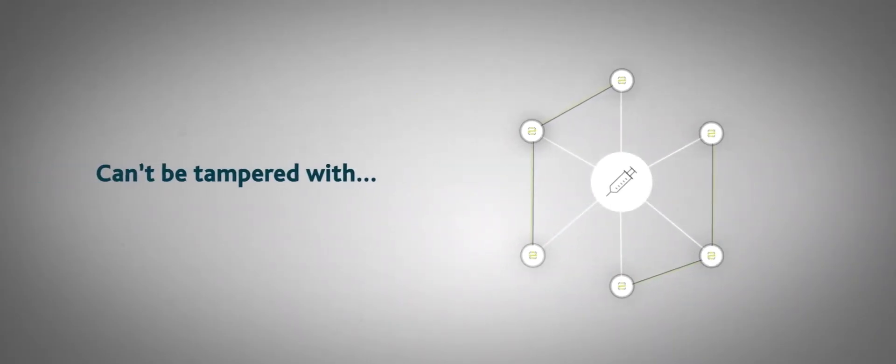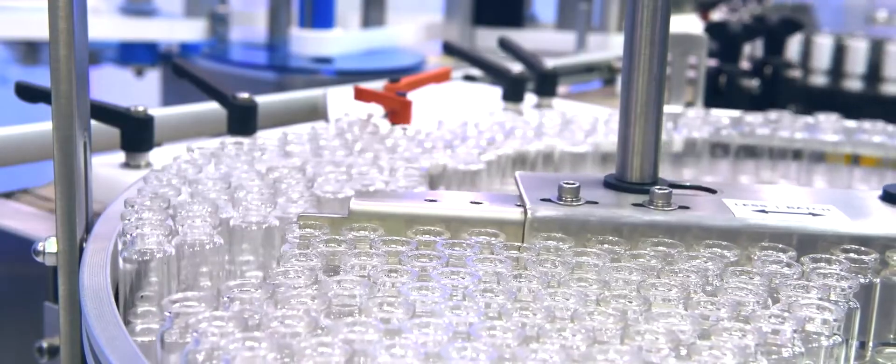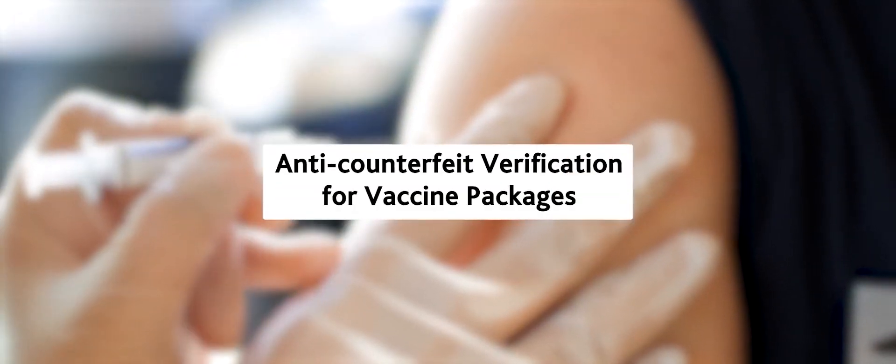As the vaccines move through various handover points of the supply chain, the product's data points are uploaded into EasyTracker's secure blockchain ledger, and this makes sure that it can't be tampered with. So users such as healthcare providers and patients are able to verify the authenticity of the vaccine.